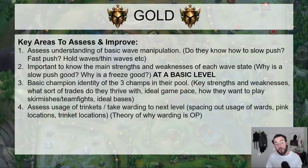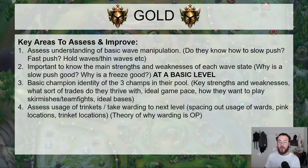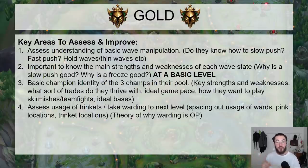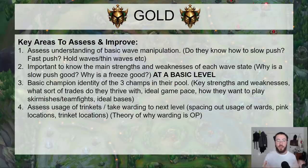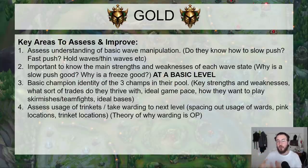Then I look at usage of trinkets and warding at the next level: spacing out ward usage so you're not using both trinkets at the same time — which creates windows with no vision at all. Are they buying pinks and using them effectively? Trinket locations in general — rather than just putting them down, you need to think about where specifically you're placing them: on the ramp, the raptor pit, etc. And understanding the theory behind why warding is powerful — what it actually allows you to do, how it influences how aggressively you can trade. This makes more sense in gold because junglers are a lot more reliable there.